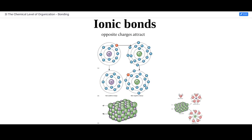That lone electron in the sodium atom can be pulled completely out of sodium's valence shell and fill the valence shell of chlorine, making both atoms electrically charged. Sodium, having one less electron than protons, would have a positive charge. Chloride, having one more electron than protons, would have a negative charge — and when we refer to the chlorine atom in its charged state, we call it chloride. Sodium with a +1 charge and chloride with a -1 charge have equal and opposite charges that attract each other, and they come together to make an ionic bond.